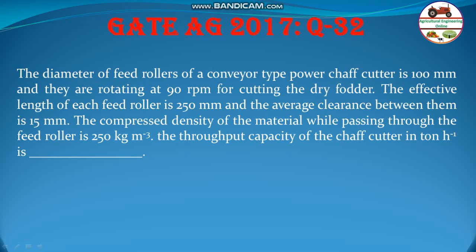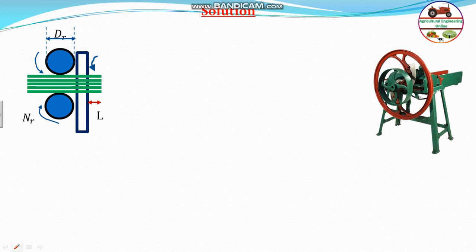Let us go to the solution part. It is a very simple problem. Let us see, this is the chaff cutter and having a feed roller like this for the chops to be passed through the cutter.